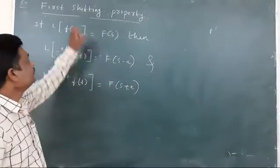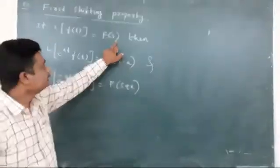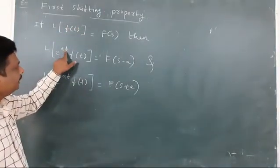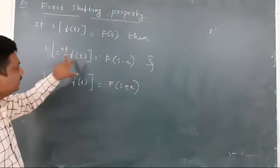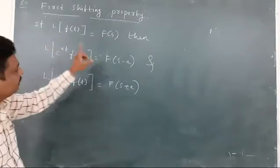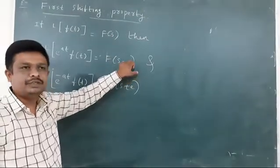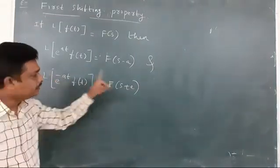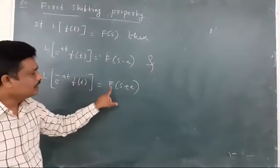Now we will see the first shifting property. We know that if L of f of t equals F of s, then L of e to the power of at times f of t equals F of s minus a. This is the shifting property — if the given function is multiplied by an exponential term, then s is replaced by s minus a. If we have a minus sign in the exponent, then L of e to the power of minus at times f of t equals F of s plus a.